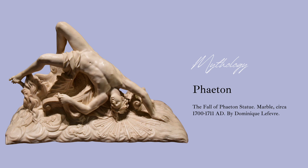In Greek mythology, Phaeton was the son of the Oceaneid Clymene and the sun god Helios. He wanted to be like his father, and so he traveled far to the east until he reached his palace. Once there, Phaeton begged Helios to let him drive his chariot — the vehicle that pulled the sun into the sky each morning — but the horses were wild and unpredictable. Helios tried to warn his son that only he could control them, but Phaeton was so insistent that Helios finally gave in and allowed him to try.